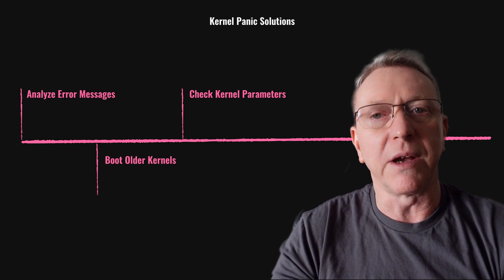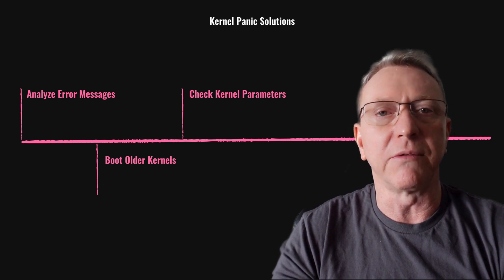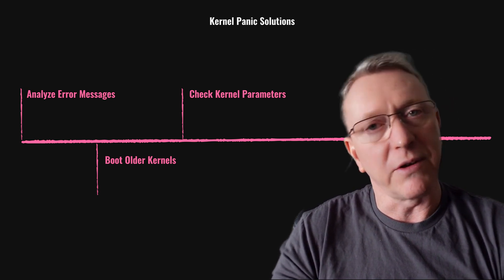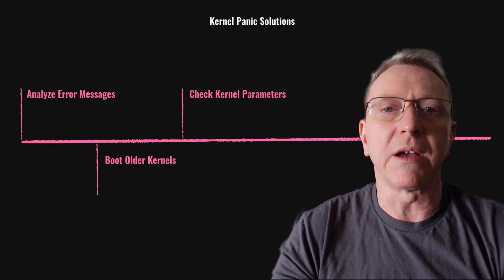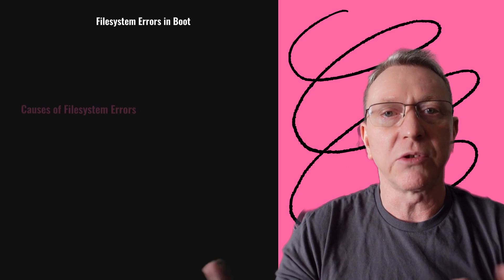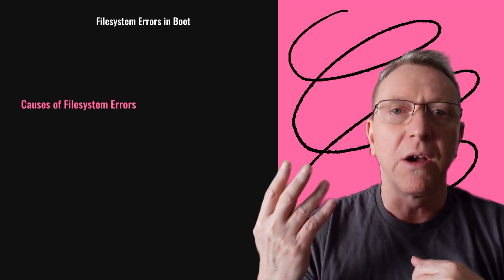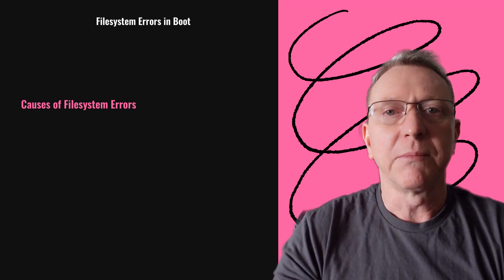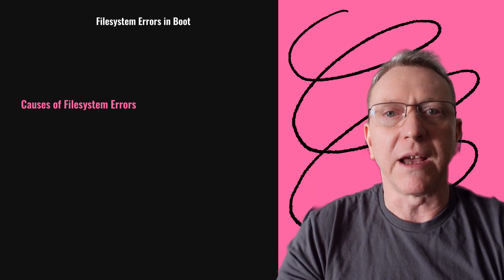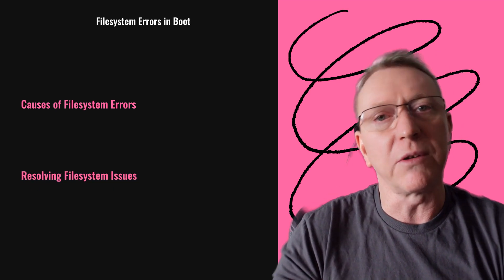File system errors can halt booting, often leading to emergency mode with read-only file systems. Causes include improper shutdowns, failing hardware, and software bugs. Identifying the affected partition and using filesystem check (fsck) can resolve these issues.